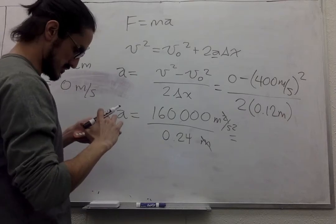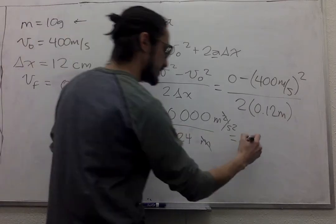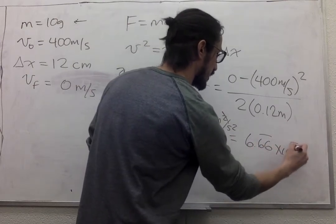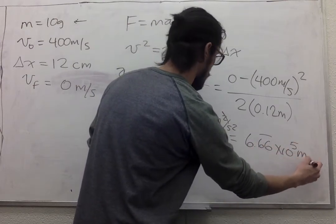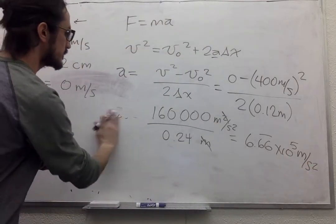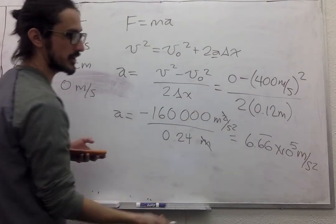Then we get 1, 2, 3, 4, 5. And this is negative. We have the negative over there.